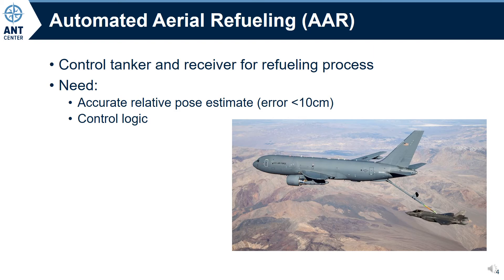Automated aerial refueling, or AAR, is autonomously controlling tanker and receiver aircraft through the approach, connection, refueling, and breakaway process. To perform AAR, we first need a precise, accurate pose estimate with error consistently less than 10 centimeters. Once we have a relative pose estimation, we then need control logic to automate the process. In this video, we focus on the pose estimation problem.